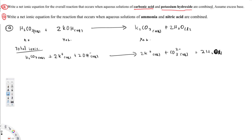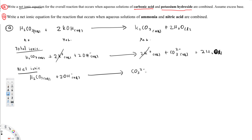The question is asking us to write the net ionic equation. To do that we have to identify the spectator ions — those are the ions that exist on both sides. Here we have K⁺ on both sides, so we cancel those. The net ionic equation is: H₂CO₃ aqueous plus 2OH⁻ aqueous → CO₃²⁻ aqueous plus 2H₂O liquid.